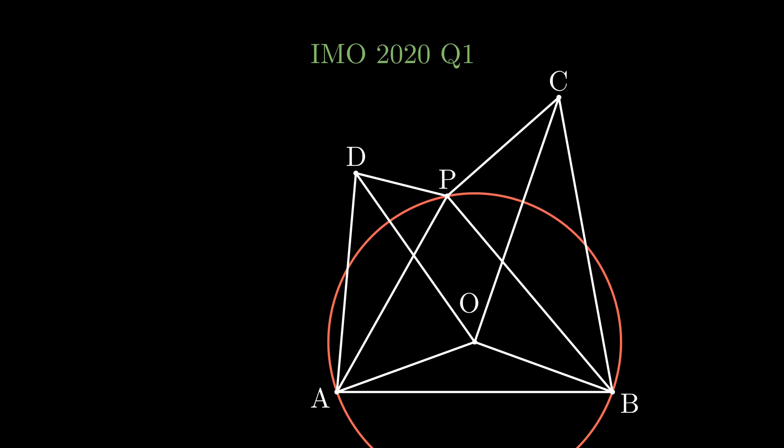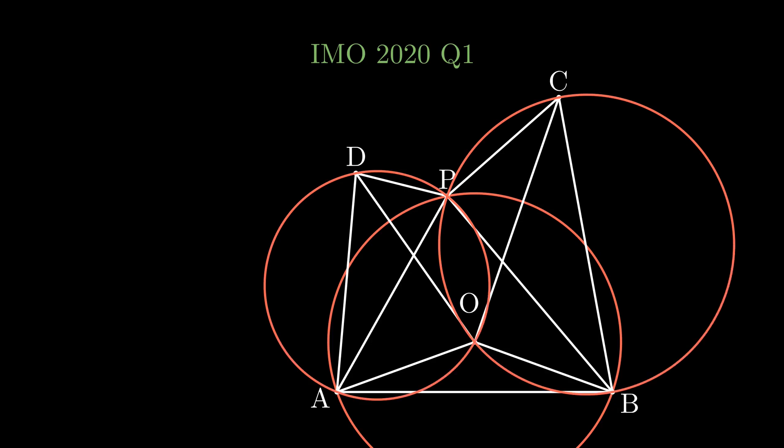Another thing we might observe is that if X is the intersection of the two angle bisectors, then ADPX and BCPX both look roughly cyclic. Let the circumcenter of triangle APB be O. By our observations, we can conjecture that ADPO is cyclic, and by symmetry, so is BCPO. Let's prove this with an angle chase.